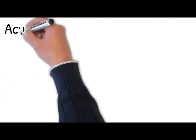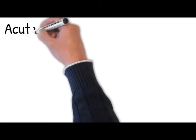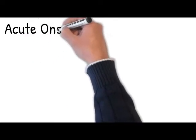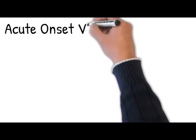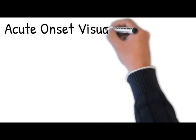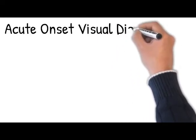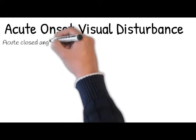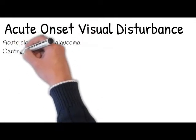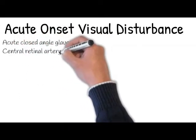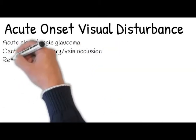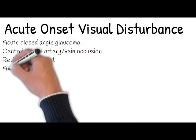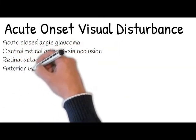Let's analyze the questions to make a possible diagnosis and rule out conditions causing double vision, depending on onset — acute or chronic. For acute onset visual disturbance, ask about local conditions affecting the eyes including acute closed-angle glaucoma, central retinal artery/vein occlusion, retinal detachment, anterior uveitis, vitreous hemorrhage, and ophthalmitis.